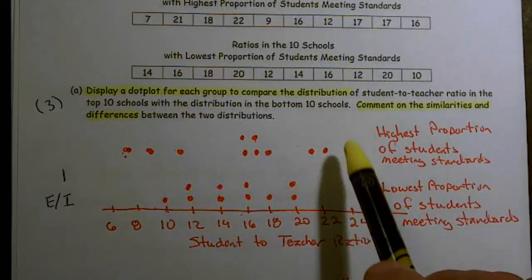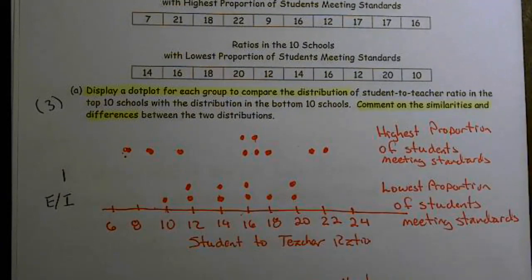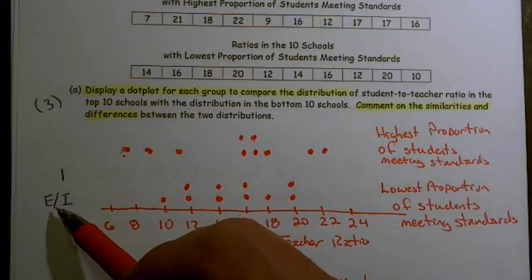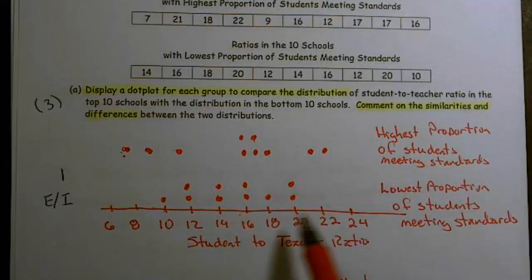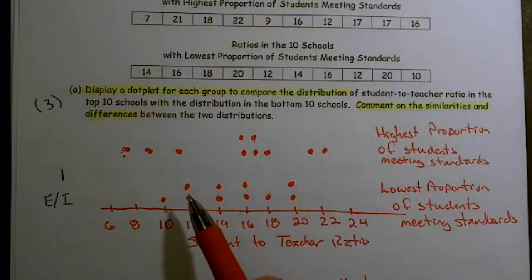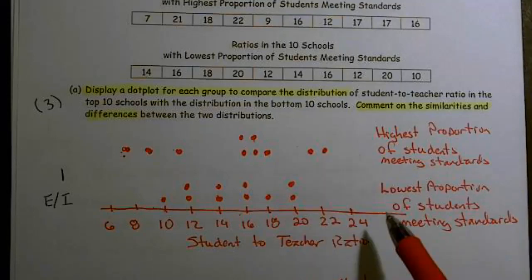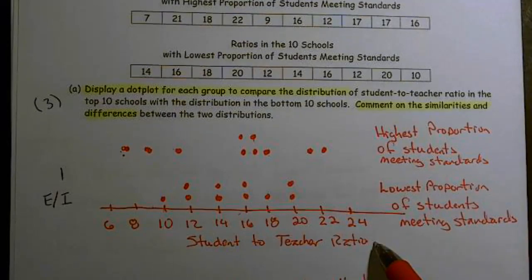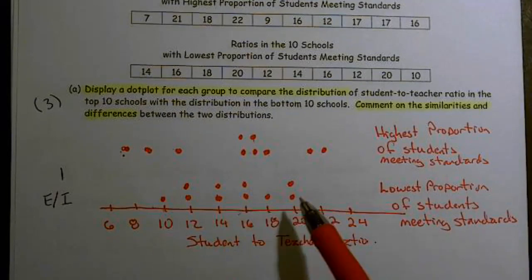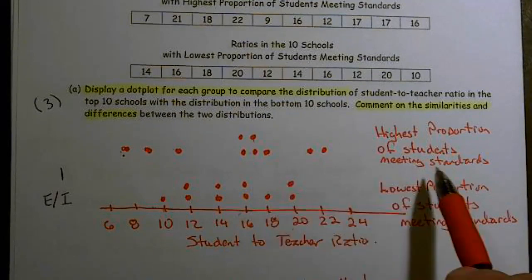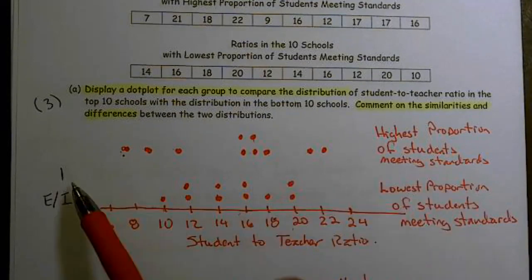To get the full point for this — and they were brutal in their grading — you either get essentially correct or incorrect. First, you had to have a dot plot with the data displayed, and it didn't matter which group you had on top. You also had to have all the labels. If you had a histogram instead of a dot plot, that was counted incorrect. If you didn't have the labels, it was also counted as incorrect. So you must have the labels and must have a dot plot drawn to get that point.